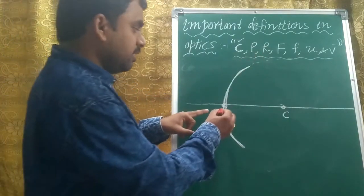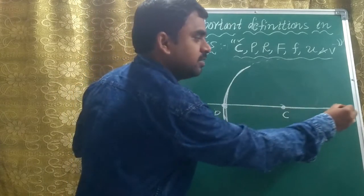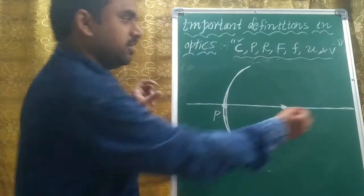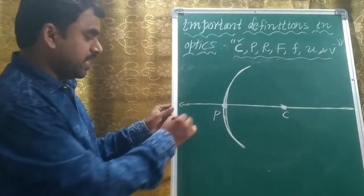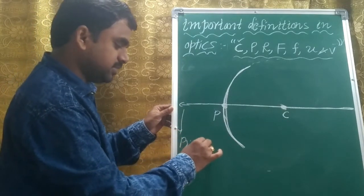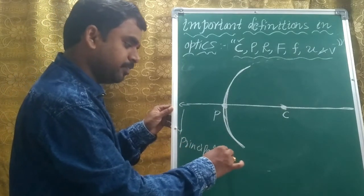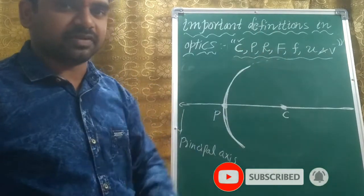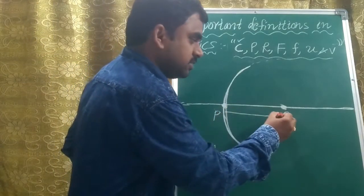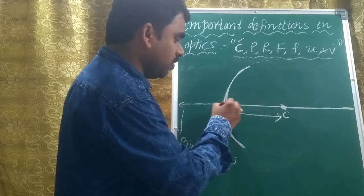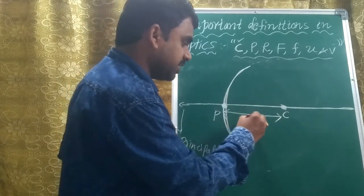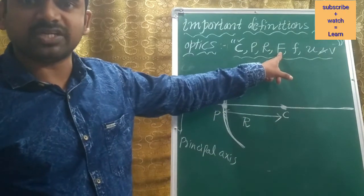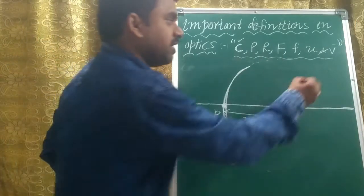The line joining the center of curvature and the pole is called the principal axis. R stands for radius of curvature. The radius of curvature means the distance between the center of curvature C and the pole. This distance is called the radius of curvature and is denoted by the letter R.